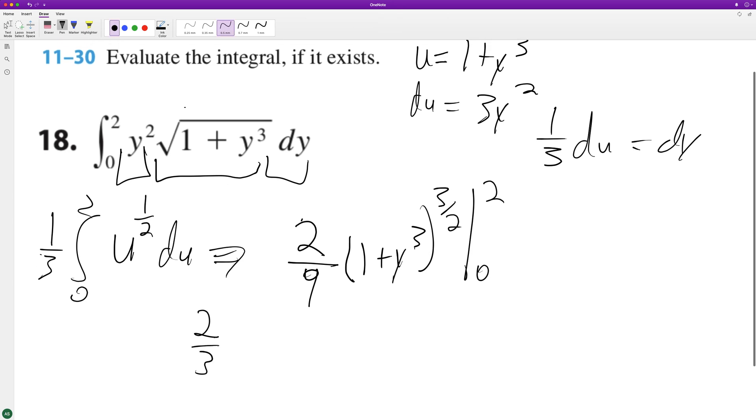Two-ninths - so we can keep this on the outside here. Let's go ahead and do the two. So 1 plus 2 cubed, so that's 8, raised to the three-halves, minus 1 plus 0 raised to the three-halves.